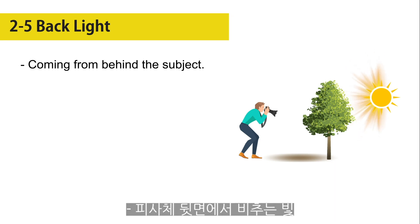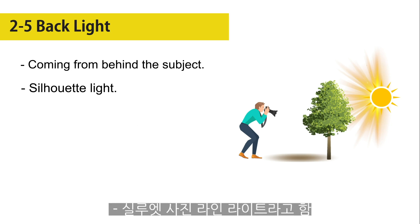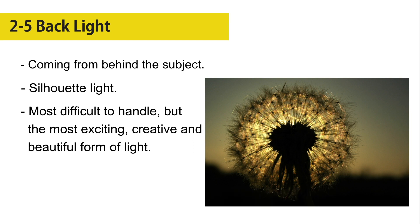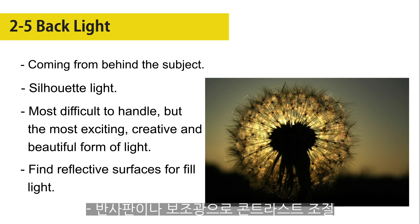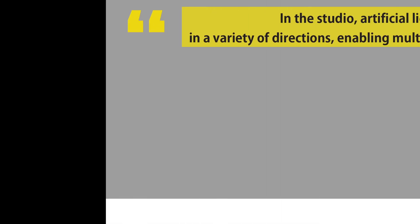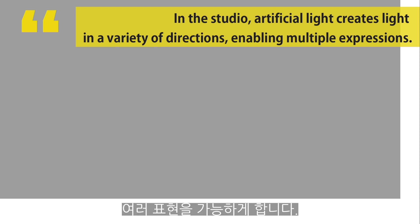Back light comes from behind the subject to create a highlight that separates the subject from the background. It produces a silhouette. Photo-technically speaking, it is most difficult to handle, but it is potentially the most exciting, creative, and beautiful form of light. When positioning your subjects, find naturally reflective surfaces for fill light when possible. In this studio, artificial light creates light in a variety of directions, enabling multiple expressions.